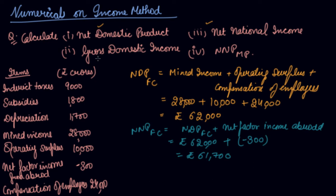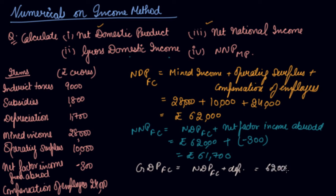Now they ask us to find out Gross Domestic Income, which means GDP at FC. To calculate NDP at FC, you used to subtract depreciation from GDP at FC. Now you are given NDP at FC and have to calculate GDP at FC, so you add back the depreciation: 62,000 plus depreciation of 1,700, which gives 63,700.